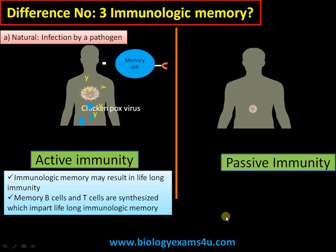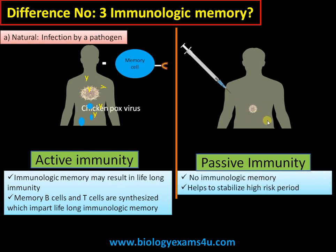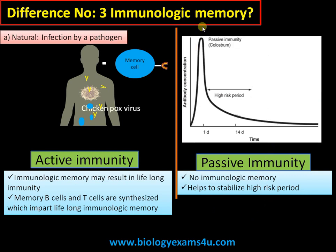Whereas in the case of passive immunity, there is no such immunologic memory, as the body's immune response is not involved in the process. The advantage of passive immunity is that it helps to stabilize the high-risk period. In the case of tetanus or snake biting, we cannot wait 14 days — immediate antibodies are required, and that is supplied by directly injecting pre-made antibodies into the system.